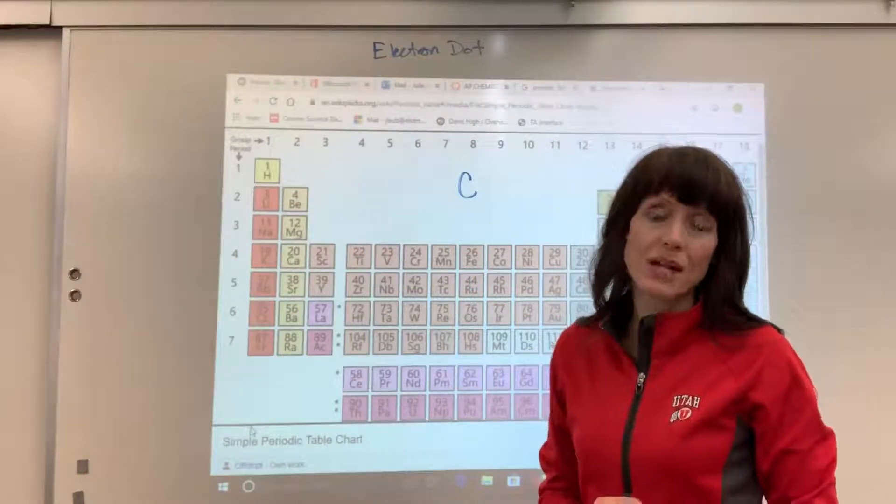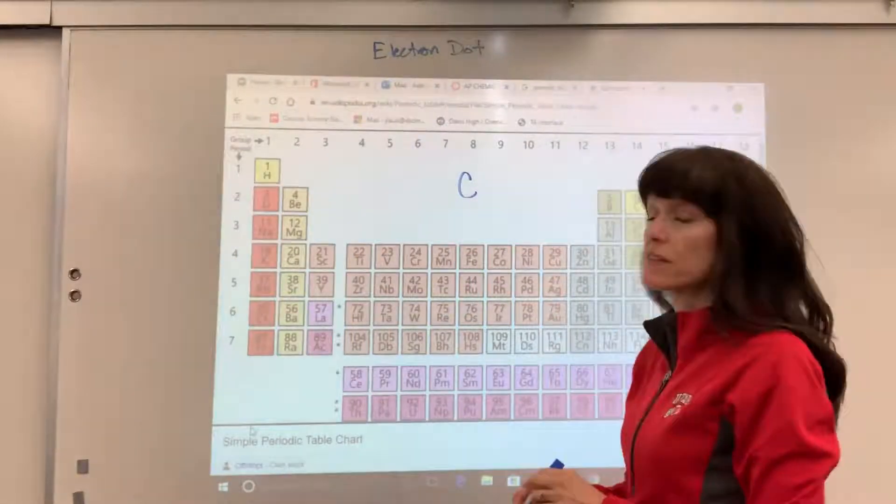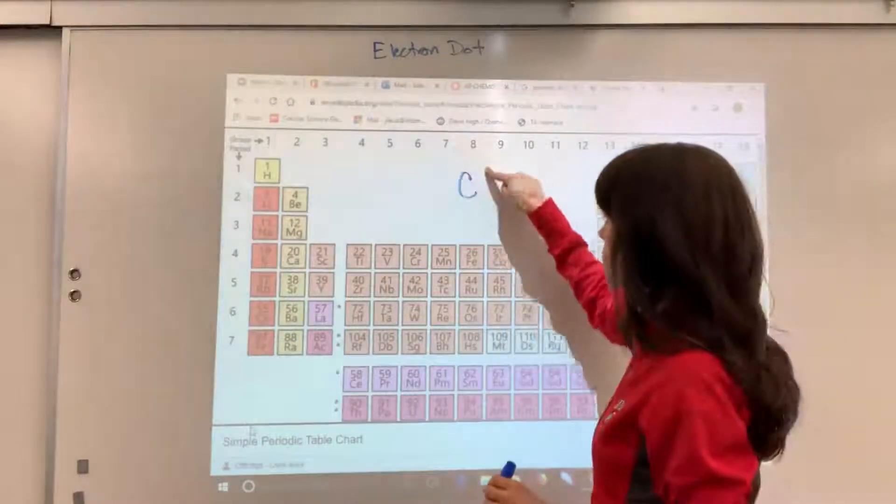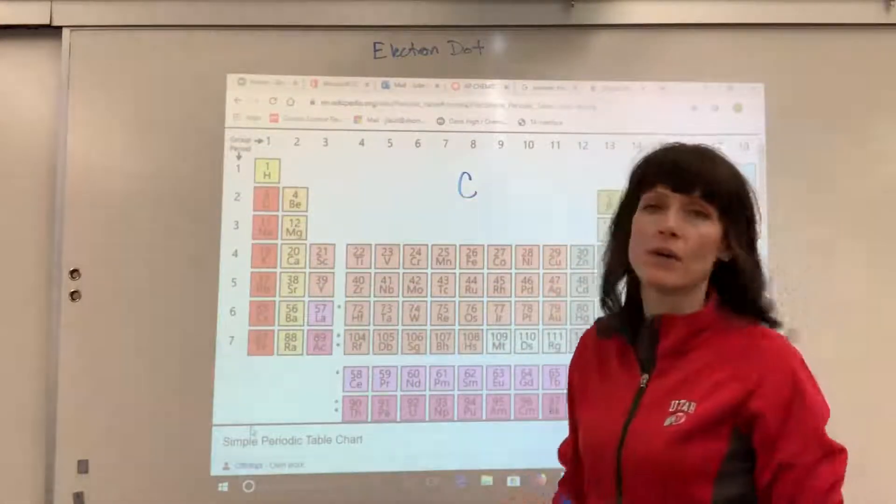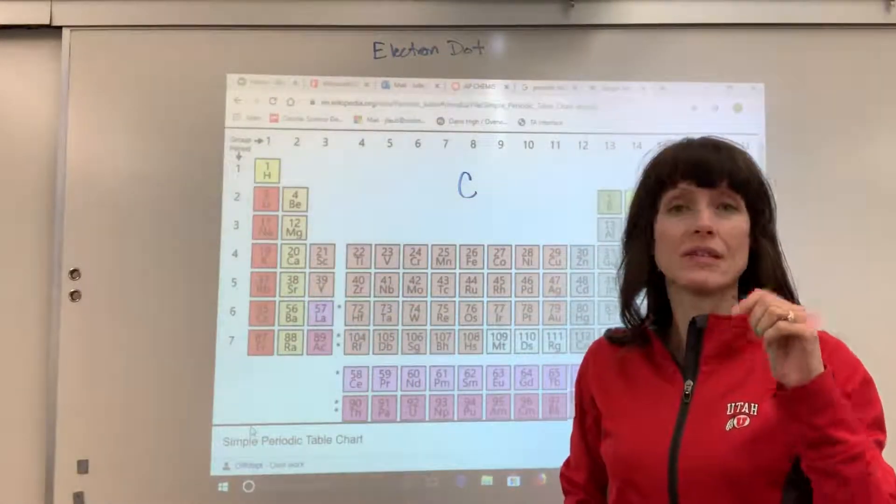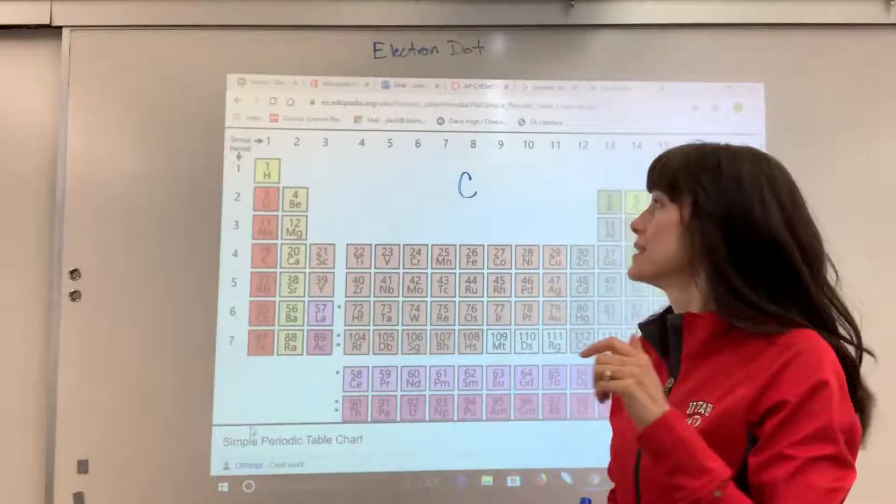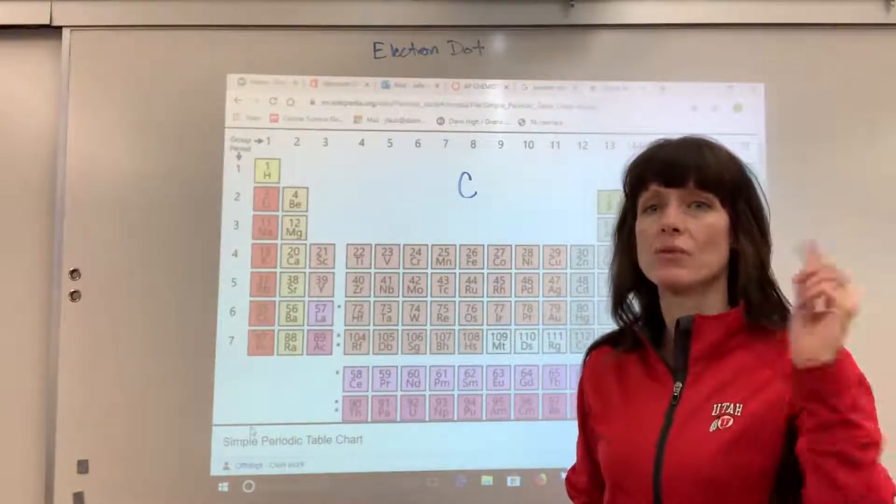So we use Hund's rule here. We will pretend that there's a box around the symbol, and we're going to put one electron around each side until each side has an electron, and then we double up.